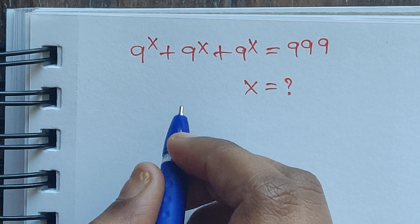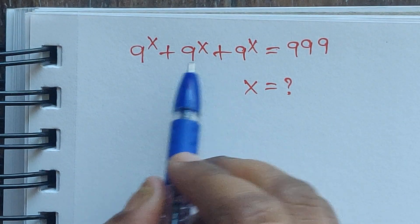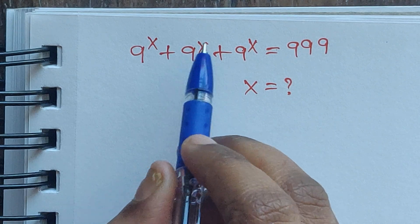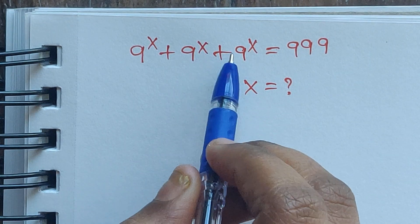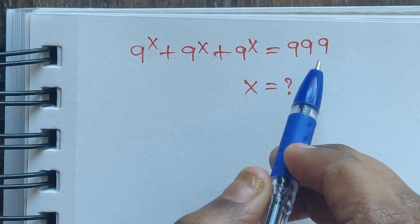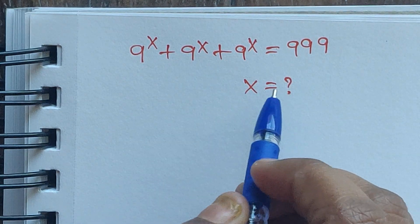Hello everyone, welcome back to our channel. Here we have one problem: 9 to the power of x plus 9 to the power of x plus 9 to the power of x equals 999. In this problem we have to find the value of x.